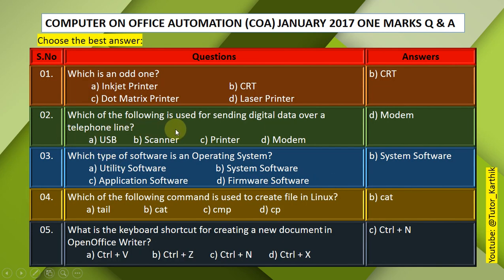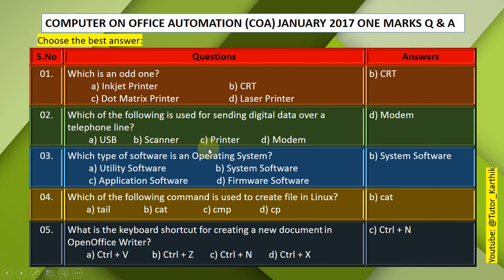Question 2: Which of the following is used for sending digital data over a telephone line? A. USB, B. Scanner, C. Printer, D. Modem. The correct answer is D — Modem.